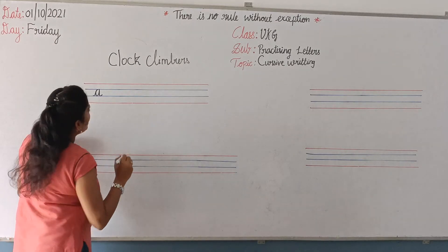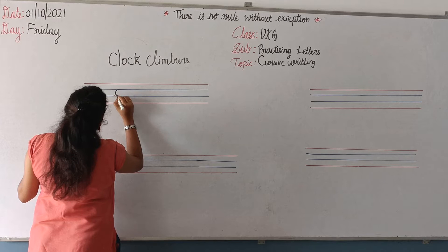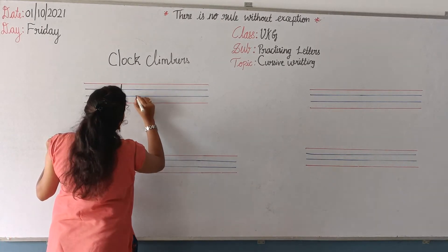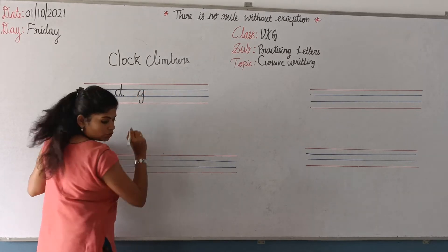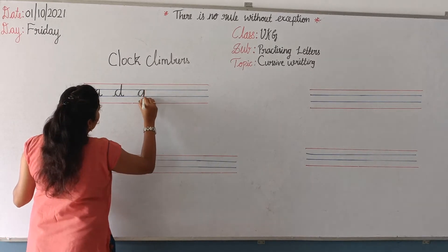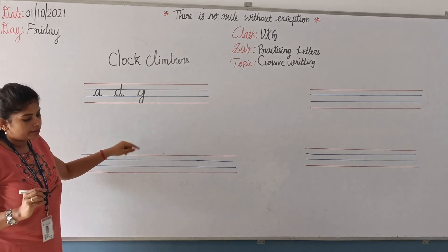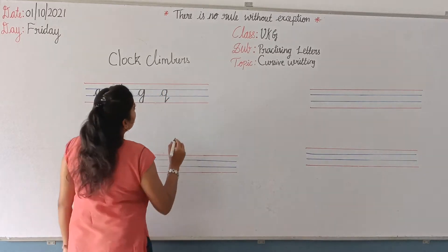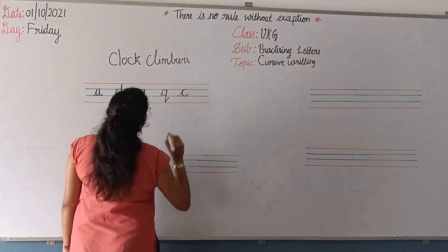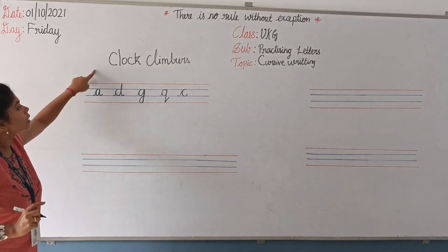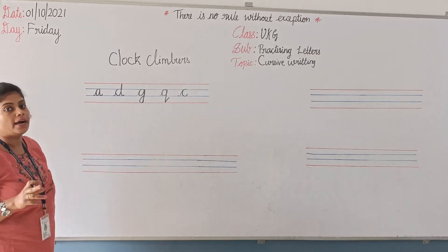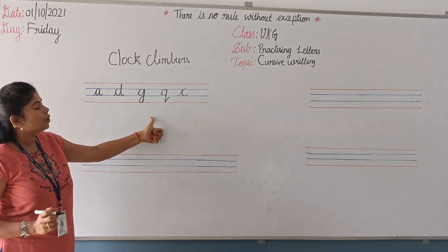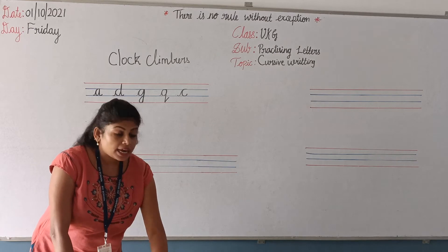The five letters under the clock climbers group are: A, D, G, Q, and C. These five letters are called clock climbers. Please practice these letters in your four-lines notebook. Start with A, D, G, Q, C.